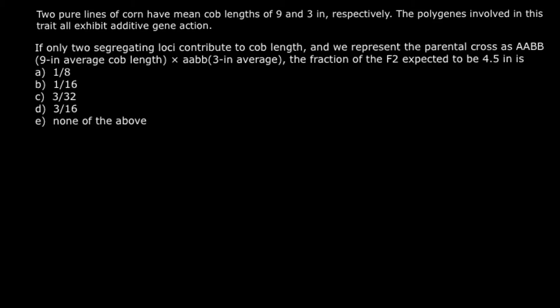This video is going to be about quantitative genetics and the dihybrid cross. Here is the problem: two pure lines of corn have mean comb lengths of 9 and 3 inches respectively. The polygenes involved in this trait all exhibit additive gene action.